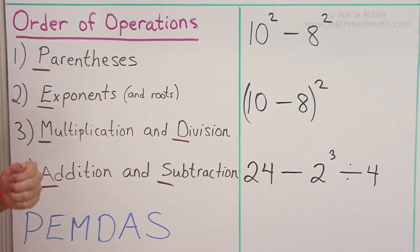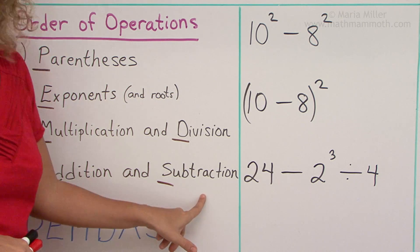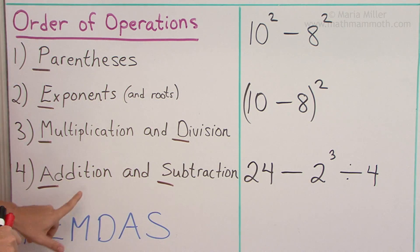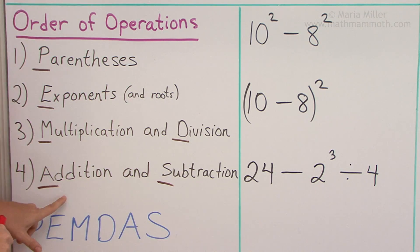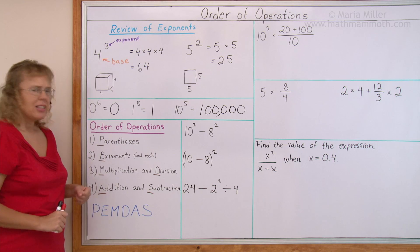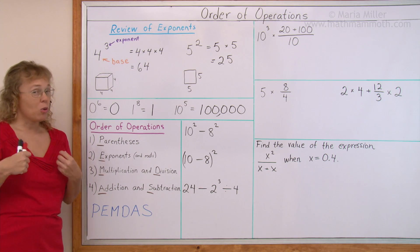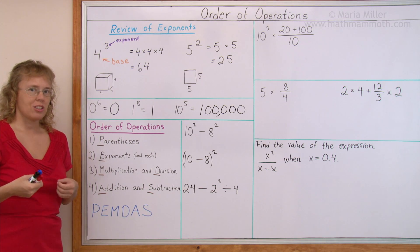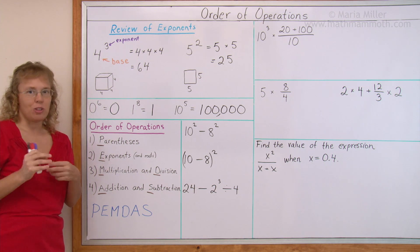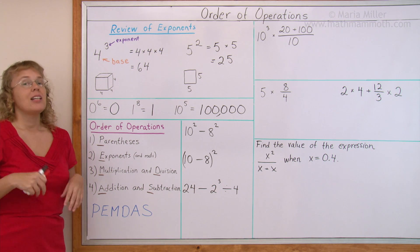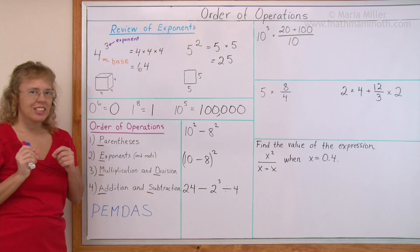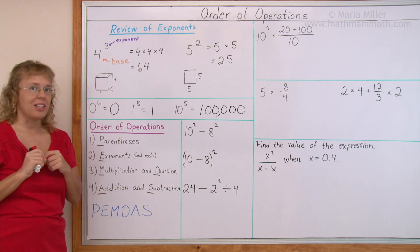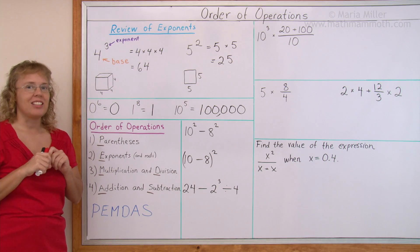Lastly, we do additions and subtractions. Again, they are on the same level — it does not mean you do all additions before all subtractions. Normally you go from left to right. In case you wonder: if you have only additions and subtractions, could you do them in any order? That is true, but you need to understand negative numbers very well before doing that, so we are not going to get into that in this lesson.